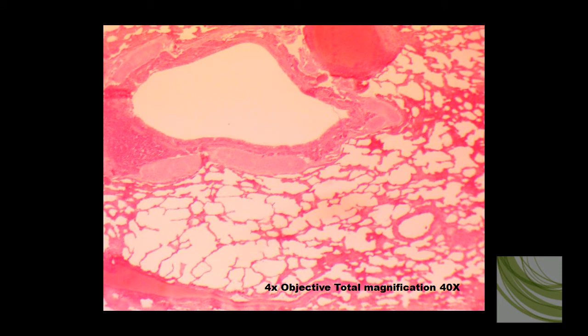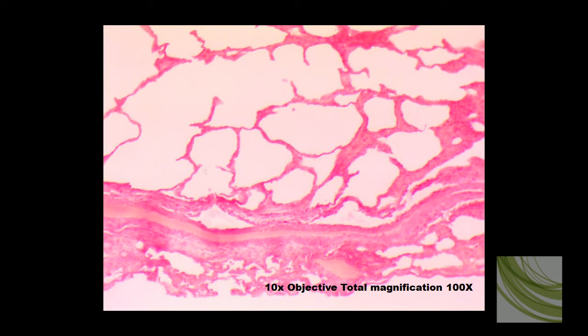Now here we're looking at a lung tissue slide, and the simple squamous — we're seeing this from the side. You can see this area here, the lining of the alveoli, is where we will find our simple squamous epithelial tissue. Here is the 10x objective for a total magnification of 100 times. We can see the alveoli and the little layers of simple squamous epithelial tissue.